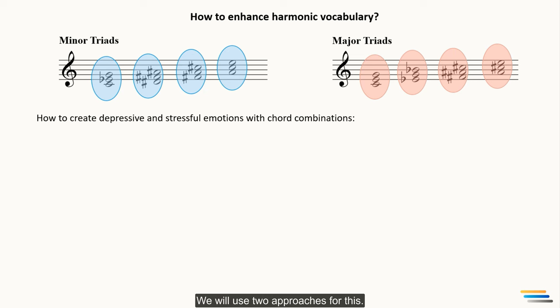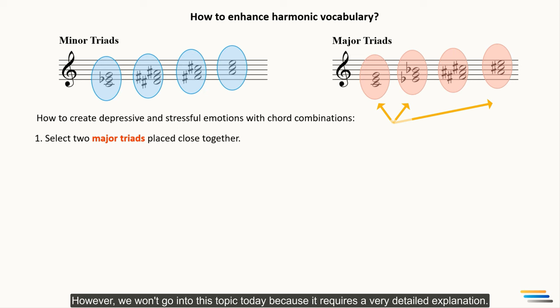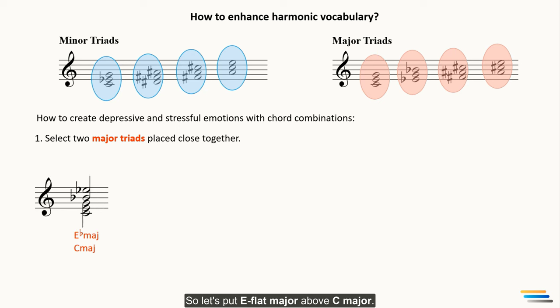We will use two approaches for this. First, select two major triads placed close together. Our first chord is C major, and the chords close to it are E flat major and A major. The arrangement of chords in such third intervals is called chromatic medians. However, we won't go into this topic today as it requires very detailed explanation. Our goal is to combine only two chords to get a polychord — let's put E flat major above C major. The G is the common tone and will be used as a connecting tone.